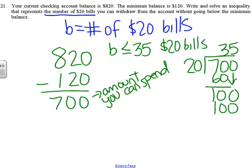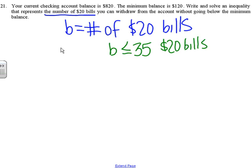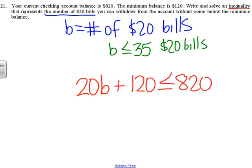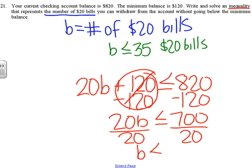To write it as an inequality: $20 times the number of bills plus $120 already in the account is less than or equal to $820. Subtract $120 from each side: 20B is less than or equal to $700. Then 700 divided by 20 is 35, so B is less than or equal to 35 twenty-dollar bills.